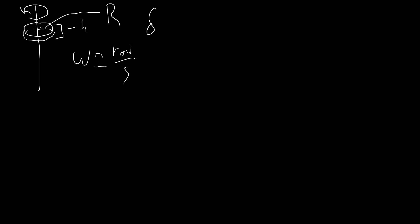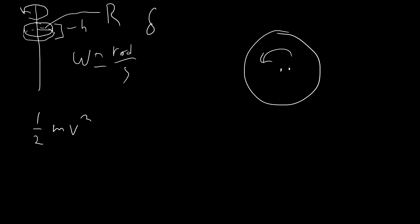The way we calculate rotational kinetic energy is by using the formula for normal kinetic energy: one half m v squared. The thing is, when we have a disk, not every part of the disk is moving at the same speed. If you imagine a big disk rotating, something one unit away from the center is moving at one unit per second. But if it's five inches out, it's moving at five inches per second, even though the entire disk is only rotating at one radian per second. That's why it's a little more difficult to calculate kinetic energy for something that's rotating.